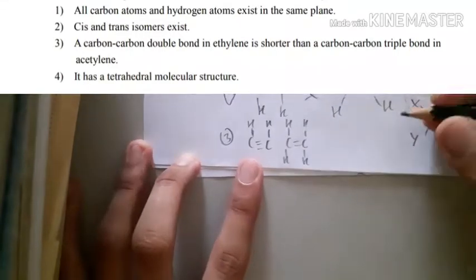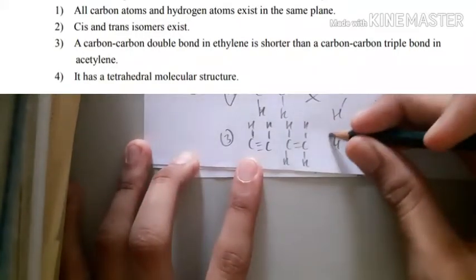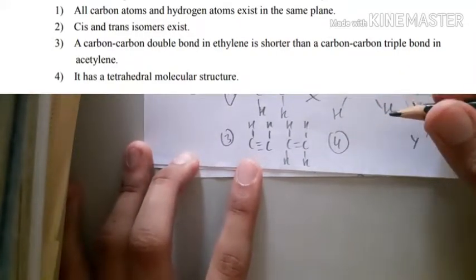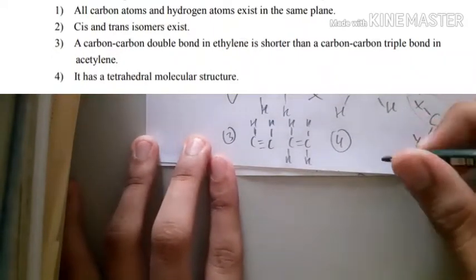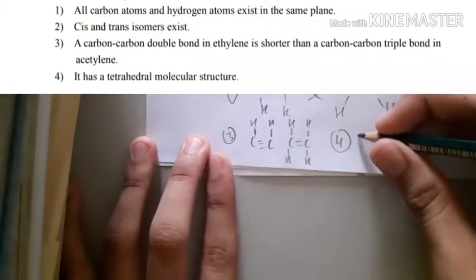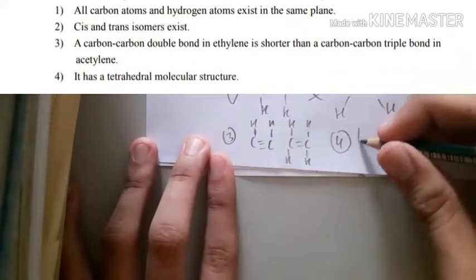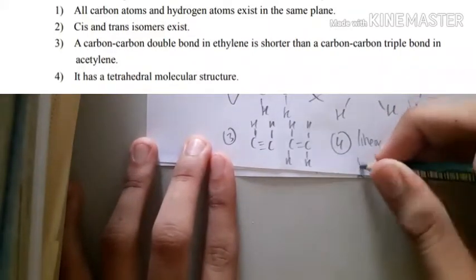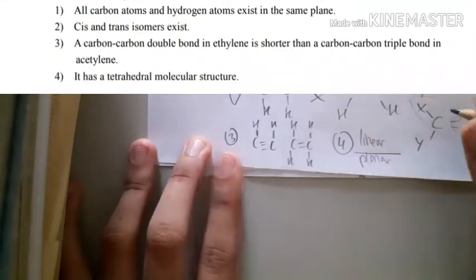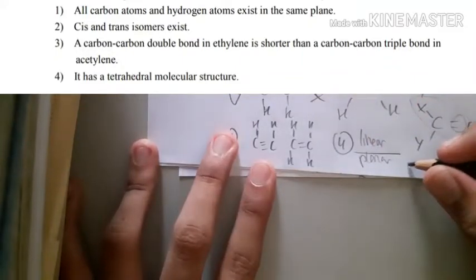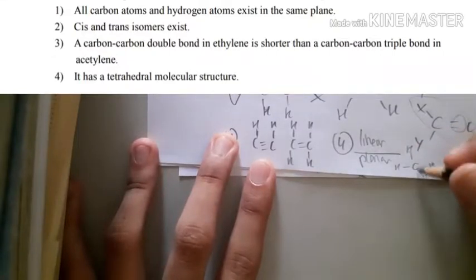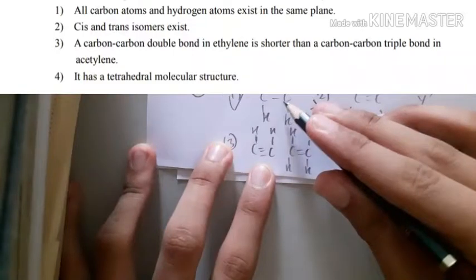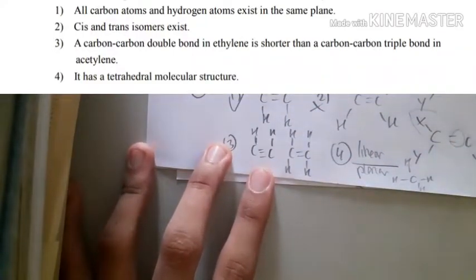Number four: it has a tetrahedral molecular structure. Well, ethylene has linear or planar structure, not tetrahedral. Tetrahedral is methane, CH4. But ethylene has a double bond, so it couldn't be tetrahedral.